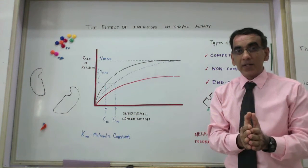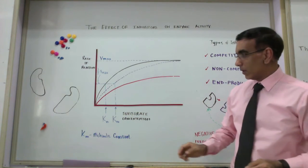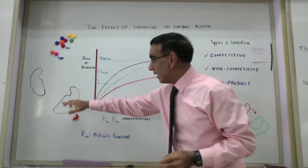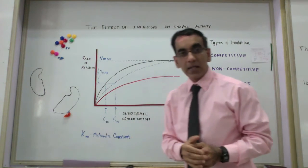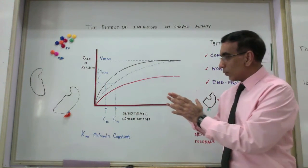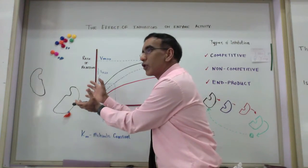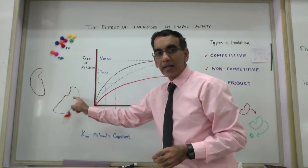But sometimes there is a type of inhibition known as non-competitive inhibition, where another molecule associates with the enzyme away from the active site at a spot known as the allosteric site. And once this association happens, it disrupts the overall structure of the enzyme, and it can lead to a change in the structure of the active site.